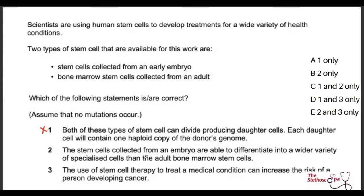Statement two says stem cells from an embryo can differentiate into a wider variety of specialised cells than adult bone marrow stem cells — absolutely true. An embryonic cell can develop into any cell in the body. By comparison, a bone marrow stem cell can only produce blood products; it cannot differentiate into nervous system tissues without outside help. So statement two is correct.